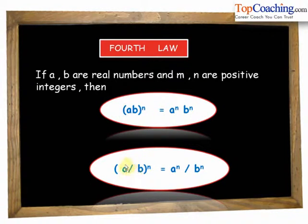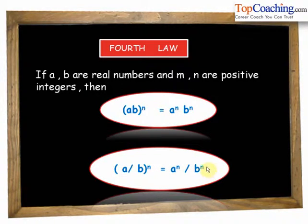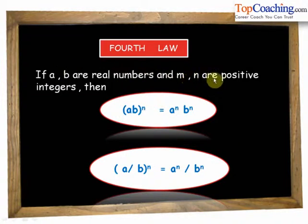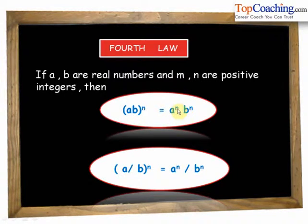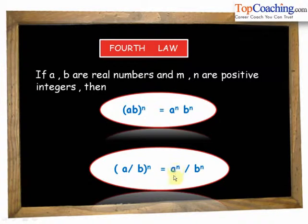Similarly, if we have a by b whole to the power of n, this can be written as a to the power of n divided by b to the power of n. So the fourth law covers both the product rule — ab to the power of n equals a to the power of n into b to the power of n — and the quotient rule — a by b to the power of n equals a to the power of n divided by b to the power of n.